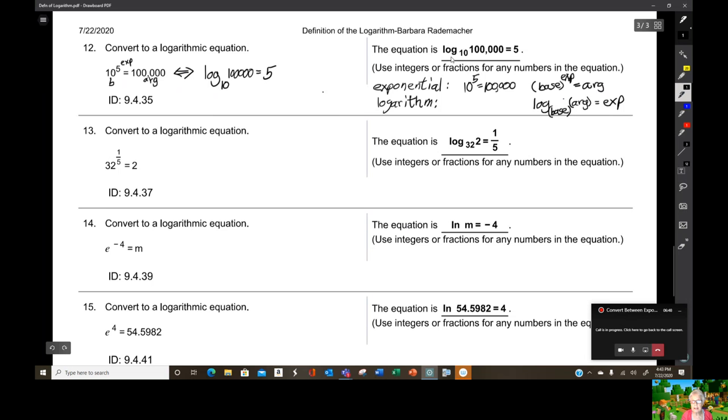And indeed, that's exactly what the answer is. I left the answers in again, so you could see what the answers are. Alright, here we have it again. Here's the base, here's the exponent, here's the argument. We're going to change this to logarithmic form. Log, I like to write it out, 32, that's the base. The argument is 2 equals 1 fifth.